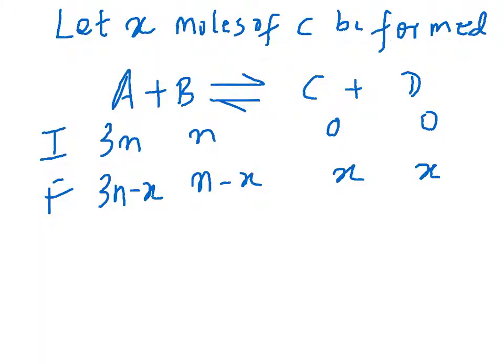So, let the moles of C be formed, be x, and given that whenever you have 1 mole of C formed, you also have 1 mole of D formed from this equation. So, you have x moles of C formed, you also have x moles of D formed.